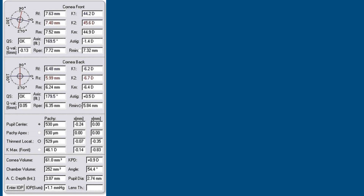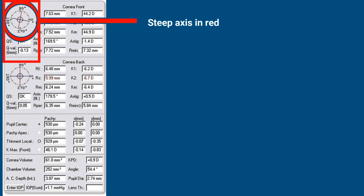Right here in the top left corner, there are three things — these circles and two values. The red circle is the steep axis, represented in red, and this is actually K2, which is the steep axis.